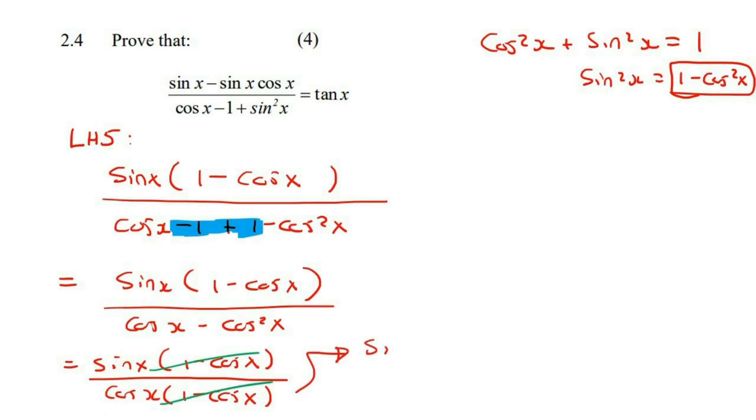And so you're now left with sin over cos, which is equal to tan. And therefore, the left-hand side is the same as the right-hand side. Thank you.